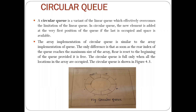Circular queue is nothing but a variant of the linear queue which effectively overcomes the limitations of the linear queue. In circular queue the new element is added at the very first position of the queue if the last is occupied and space is available. This is one of the advantages of the circular queue, or we can say to overcome the drawback of the linear queue we are implementing the circular queue.